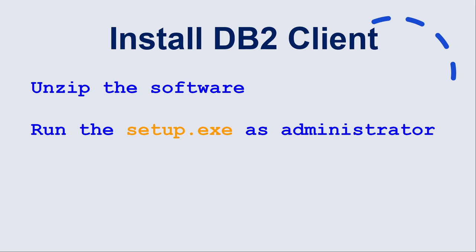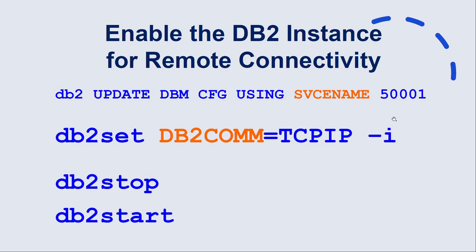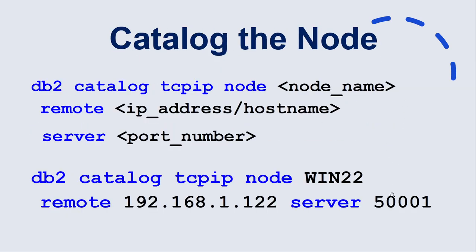Once the DB2 client is installed, first thing is to catalog the node. Use DB2 catalog TCP/IP node with a node name of your choice, the remote IP address or hostname of the database server, and the port on which the instance is listening. This is the same port you configured on the server — in this case 5001.